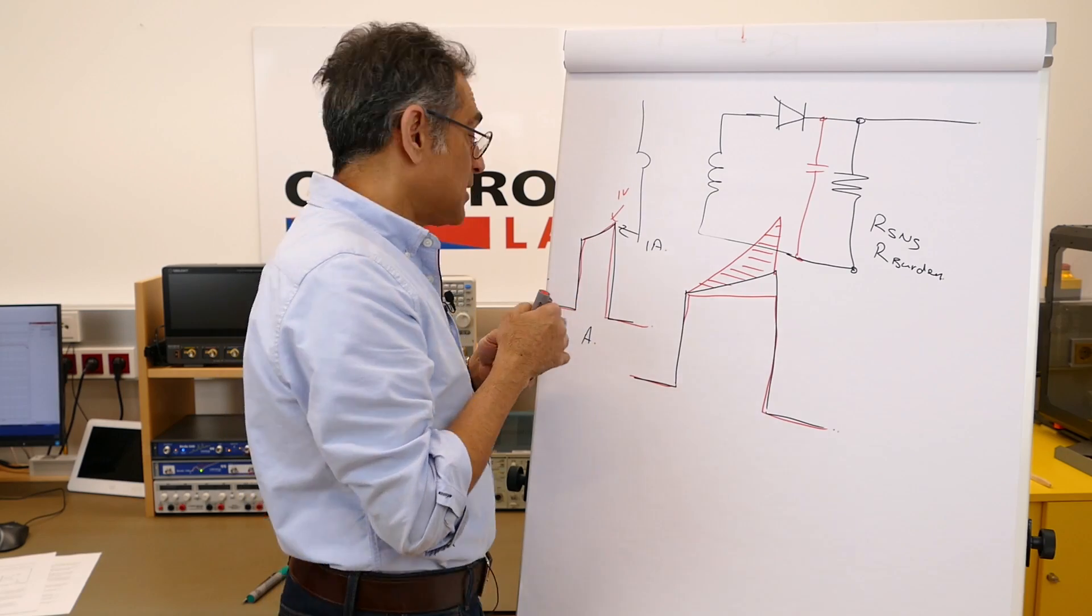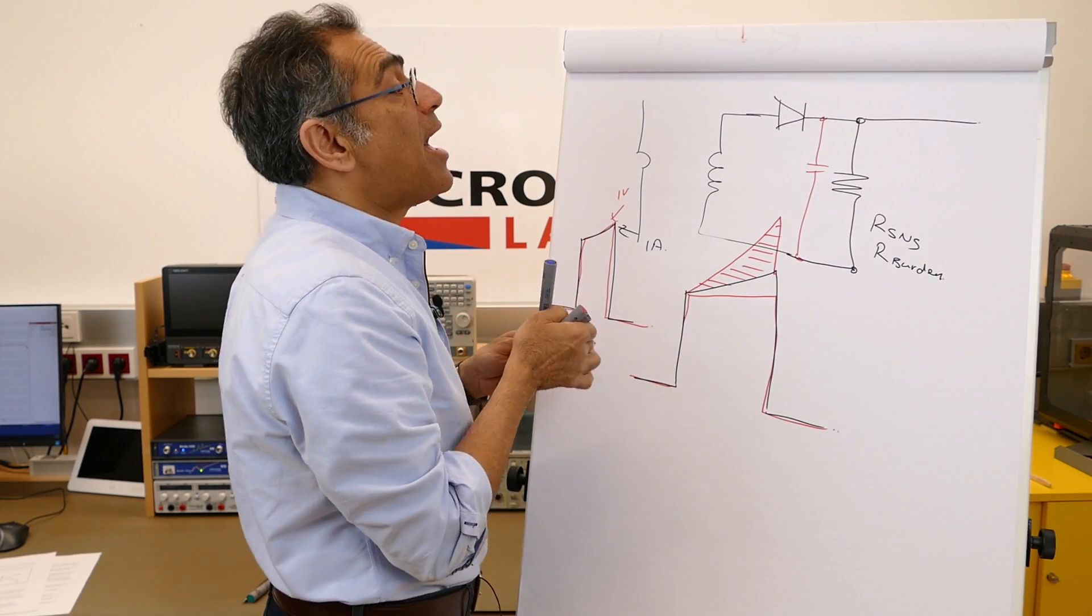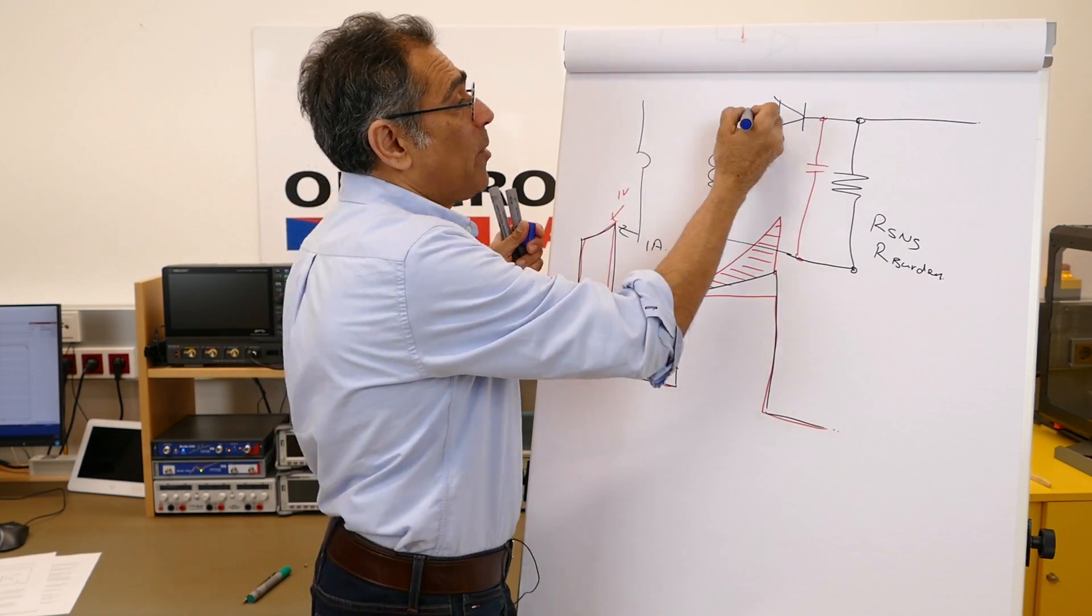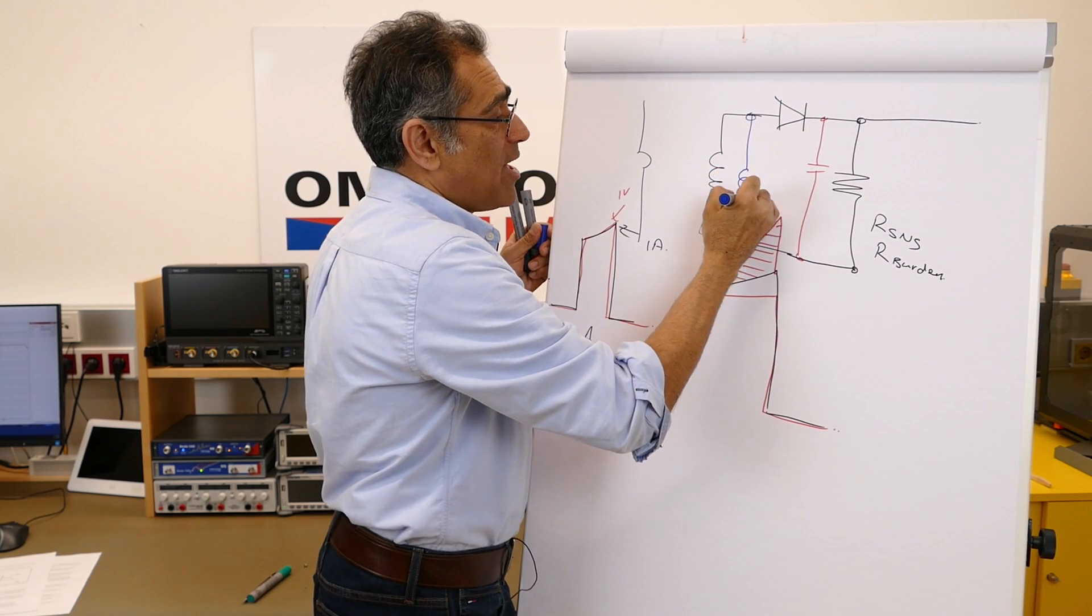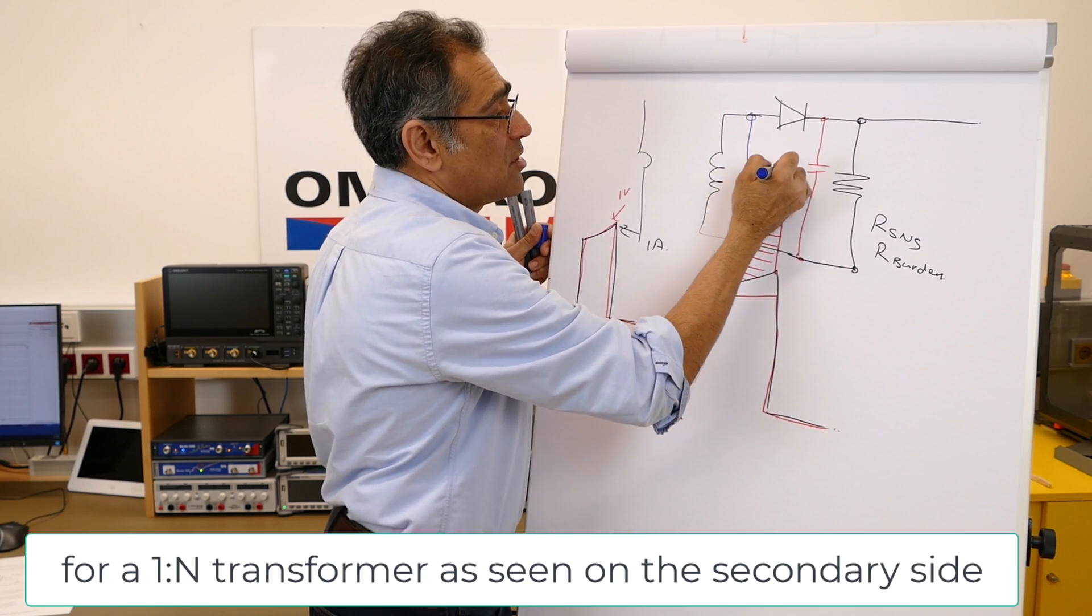And that is one of the reasons why sub-harmonic oscillations in current mode happens sometimes less than 50% duty. Theoretically, it should only happen at 50% duty or above. But because we are adding this negative ramp to it, sometimes we get it at less than 50% duty. And that, of course, causes a problem. How do we go about solving this? Well, we know that a transformer has got a certain amount of magnetizing inductance, called LM.